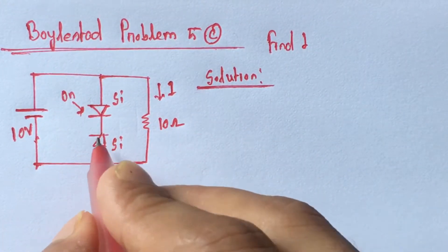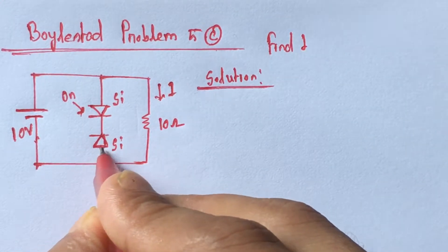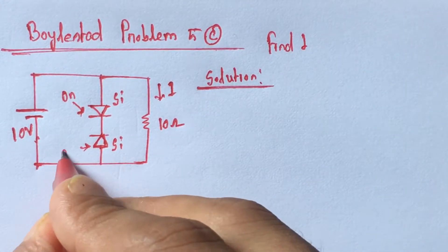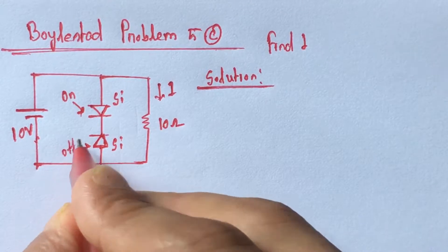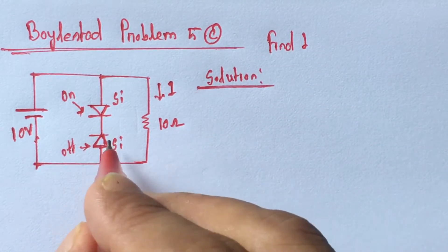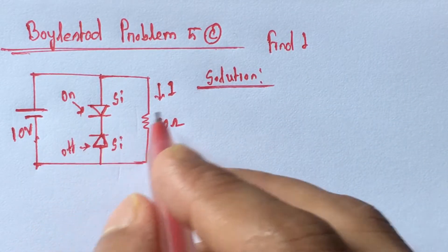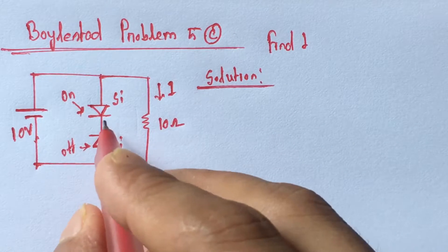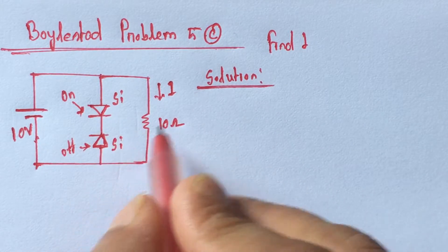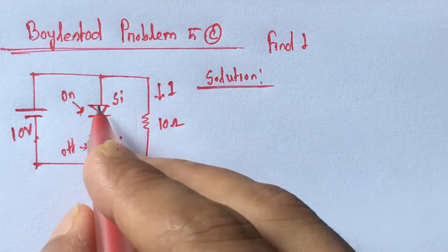Now this silicon diode is reverse biased, so this diode is off. If we redraw the circuit after replacing these two diodes by their equivalent drop and open circuit,